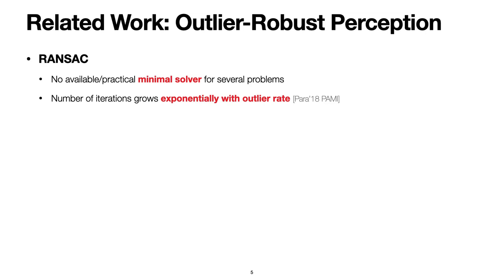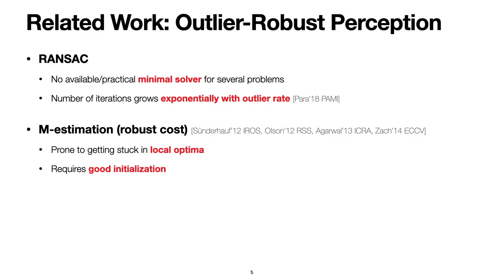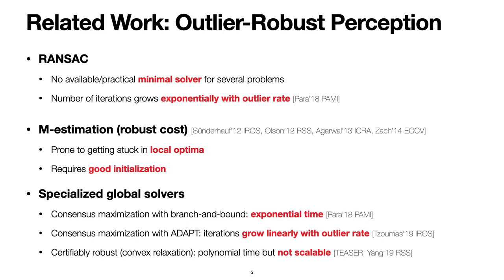RANSAC has been the most popular framework. However, RANSAC has two drawbacks: first, it requires a minimal solver, which is not available for several perception problems; second, the number of iterations in RANSAC grows exponentially with outlier rates, making RANSAC inefficient in high-outlier regimes. M-estimation is also popular, but is prone to local minima and requires a good initialization. Specialized global solvers such as consensus maximization using branch-and-bound and ADAPT also exist, but branch-and-bound has exponential time complexity and ADAPT's iterations grow linearly with outlier rate. Convex relaxations can yield certifiable solvers, but this method is currently not scalable due to limitations in SDP solvers.